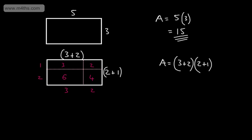We can see that the total area is the same as before: 3 plus 2 is 5, 6 plus 4 plus 3 plus 2 is 15. This is a visual representation. With an algebraic expression like x plus 2 and x plus 1, we can't just add terms — we have to multiply each term by one another.